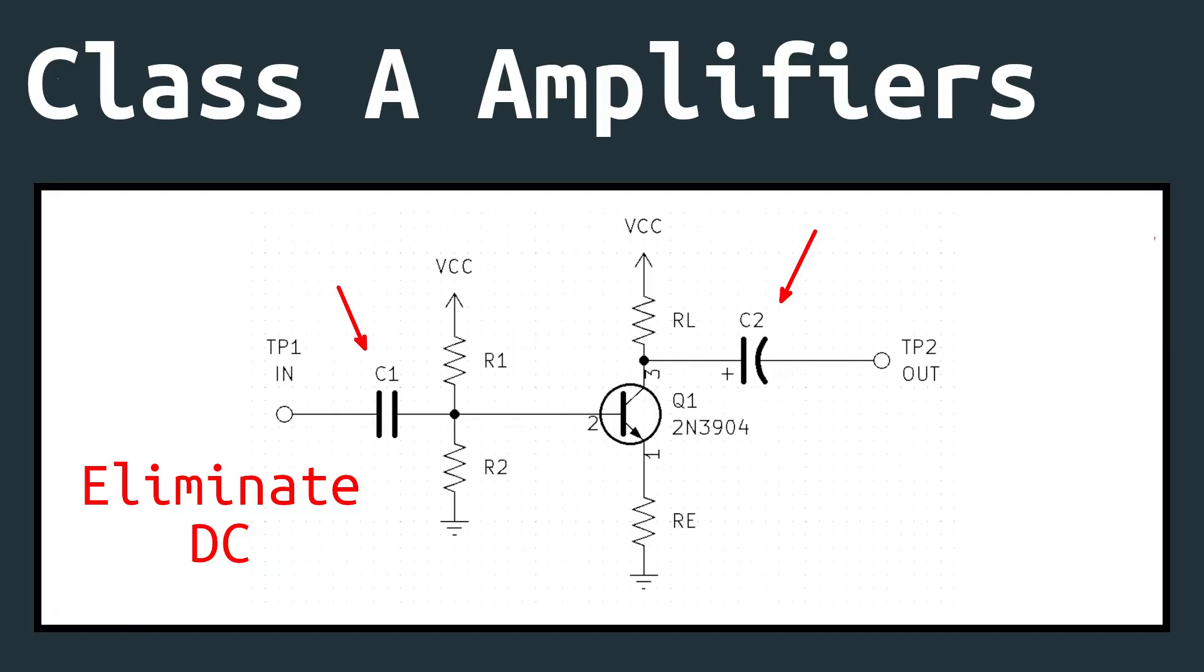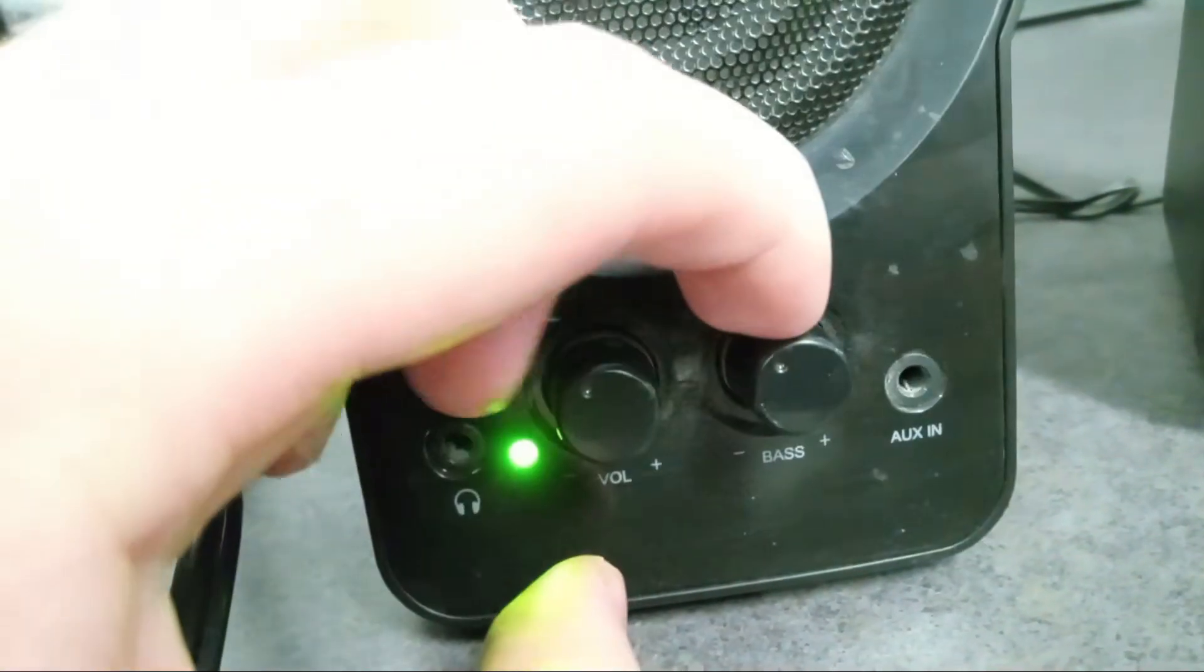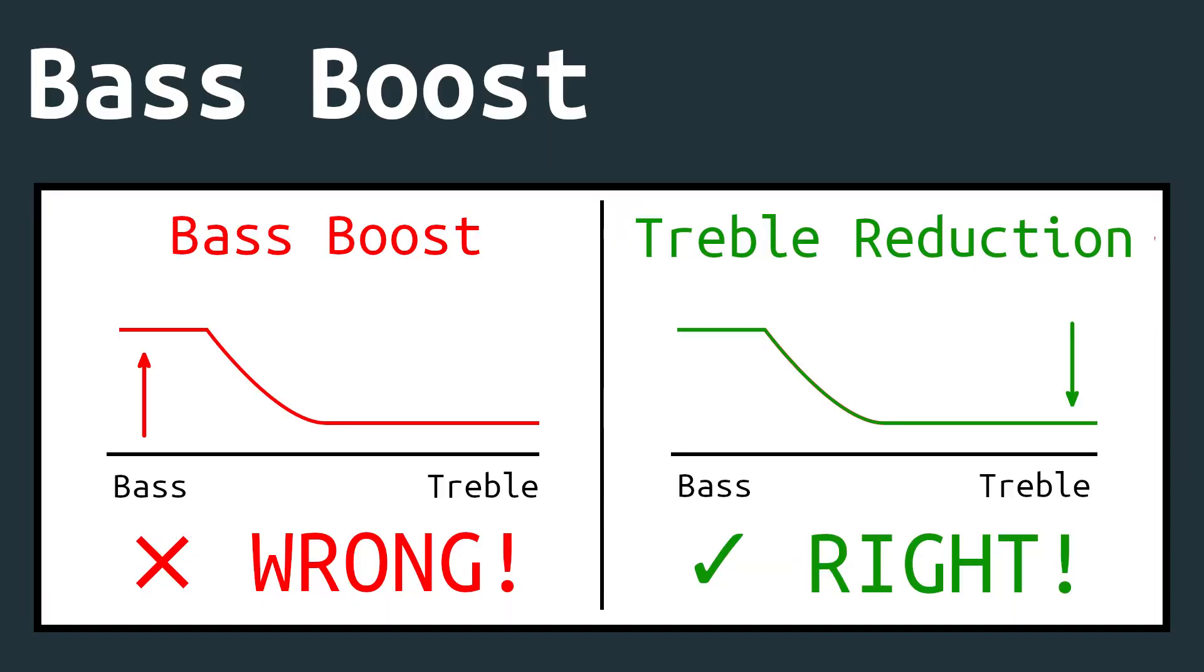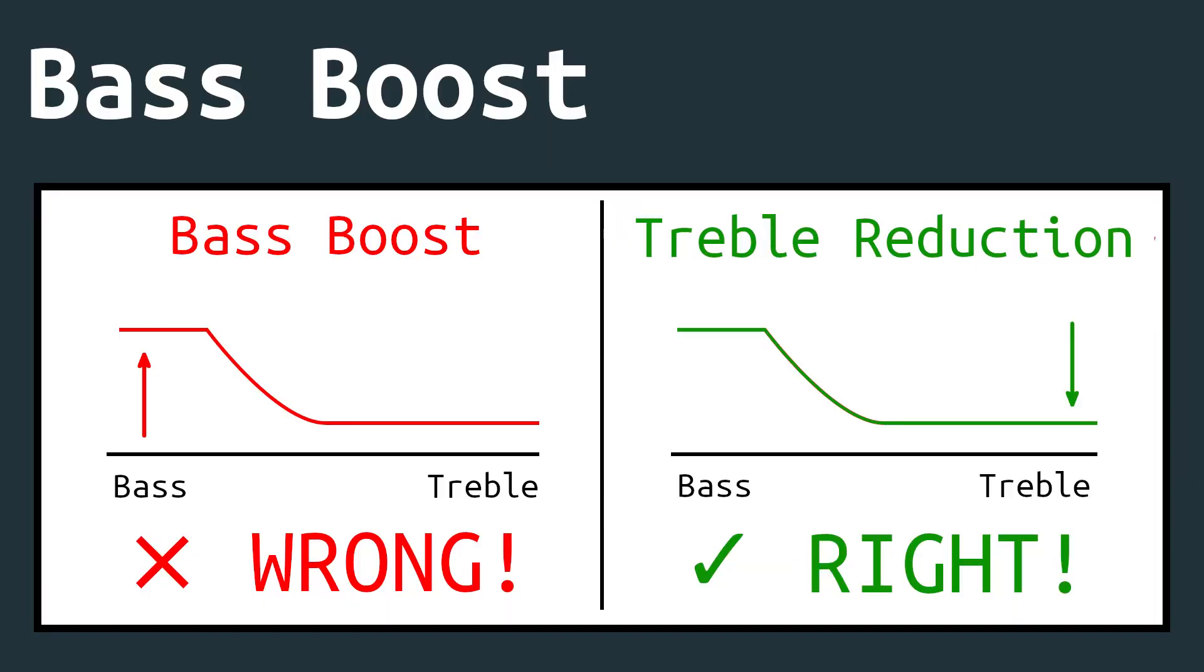Anyways, while we are done with the class A amplifier, I'm sure some of you are still curious about the aforementioned bass knob. The explanation behind it is really quite simple. First of all, you should stop thinking bass boost and instead think of treble reduction. Wherein the bass is kept the same and all the higher frequencies are instead diminished.